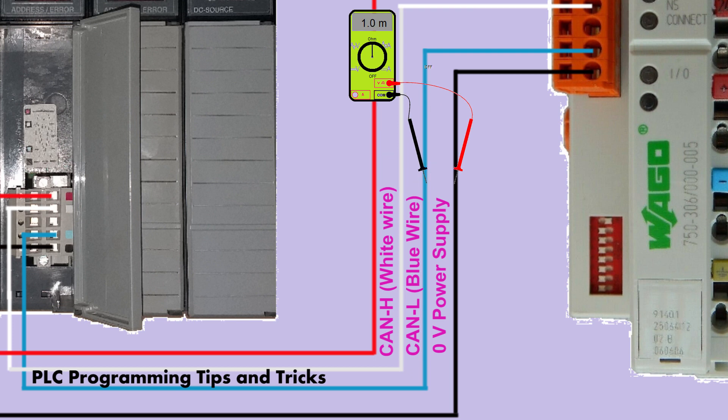This can be verified by an ohmmeter. The resistance between these lines must be above 1 mega ohm. These are some of the tips which are useful for troubleshooting a faulty DeviceNet network.